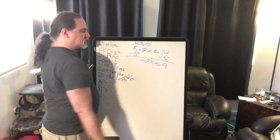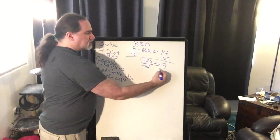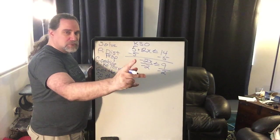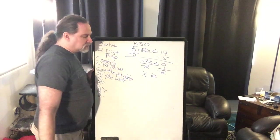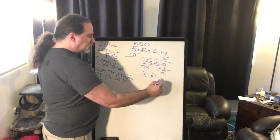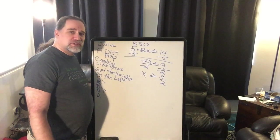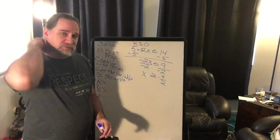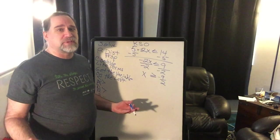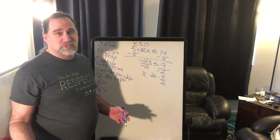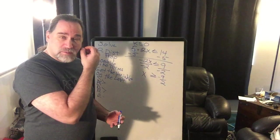Subtract 5 from both sides and we get negative 2x ≤ 9. Then we divide by negative 2. Those are the magic words: divide by a negative. So we turn the inequality sign to face the other direction. The answer is x ≥ negative 9/2, or negative 4.5. I wouldn't turn it into a mixed number — mixed numbers stopped being useful about a year ago. Use decimals or improper fractions instead.